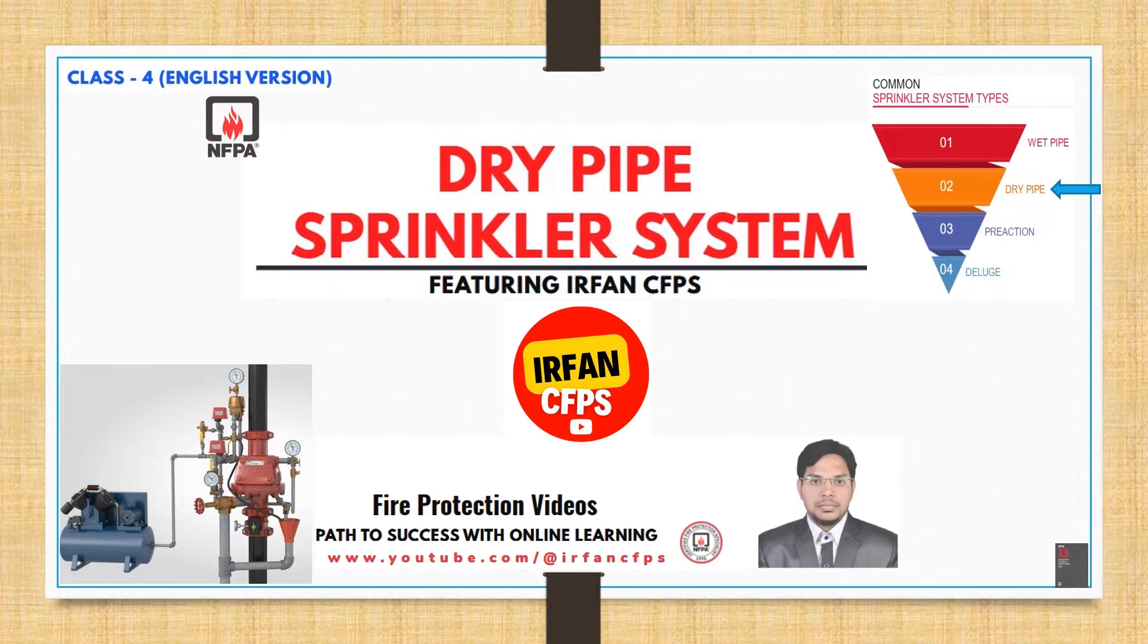In our previous class, we learned about different types of automatic sprinkler systems and explicitly reviewed wet sprinkler system type. In today's class, we shall discuss the second type of automatic sprinkler system, the dry type sprinkler system, which is similar to wet sprinkler system with only one major difference. Do not miss the end since there is an interesting animation showing the complete dry pipe sprinkler system.